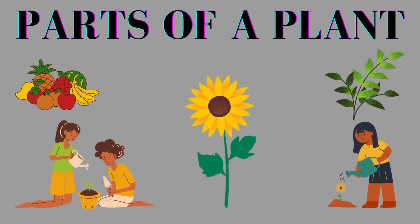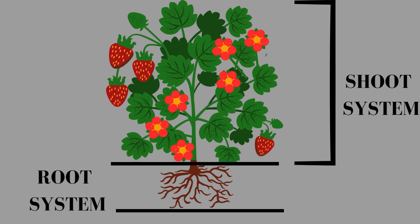Parts of a plant. The plant has two systems: root system and shoot system. The root system usually grows under the ground while the shoot system grows above the ground.